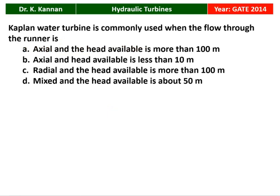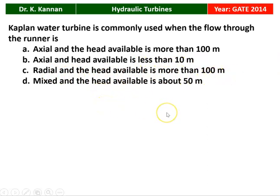Next question from the 2014 question paper: Kaplan water turbine is commonly used when the flow rate through the runner is? The 4 options are: axial and head available more than 100 meter; axial and head available less than 10 meter; radial and head available more than 100 meter; mixed flow and head available about 50 meter. Kaplan turbine is a low head turbine, so when the head available is less than 10 meter, we prefer a Kaplan turbine, and it is an axial flow turbine. Option B is the correct answer.